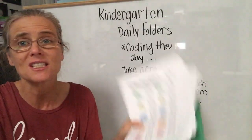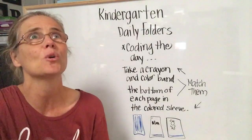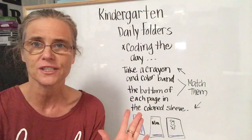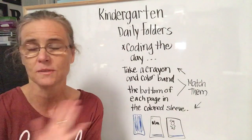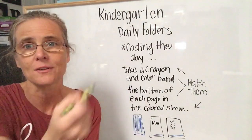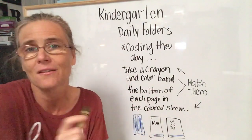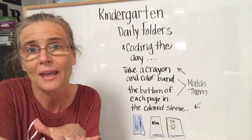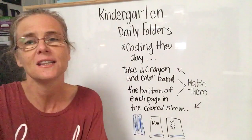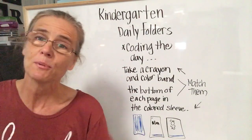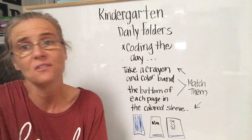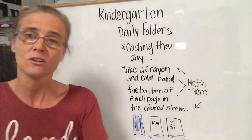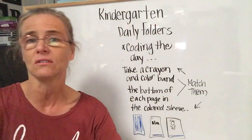This will help you stay more organized, and the great thing is it'll let you be independent. Independent means you can do it by yourself without the help of anyone bigger than you. You are big enough to hold a crayon, big enough to color a band, and big enough to sort by color. This is really work you can do all by your five or six year old self.